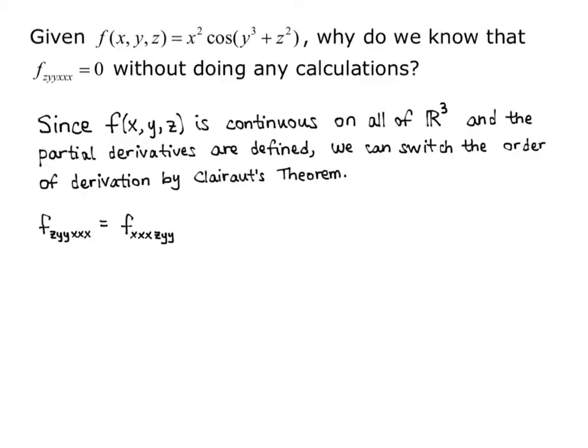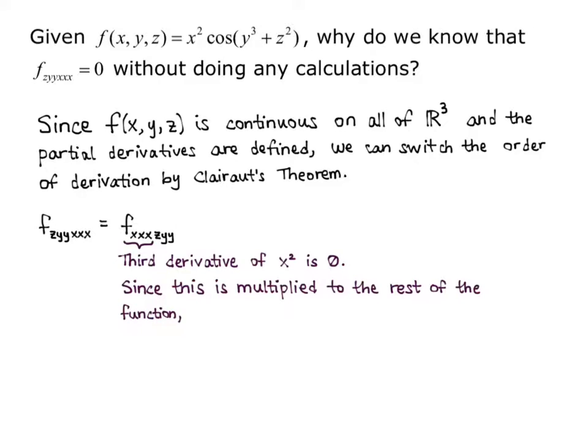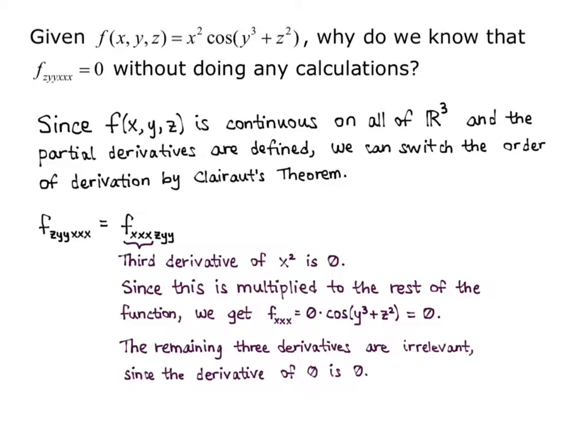And we know that the third derivative of x² is zero. Since this is multiplied to the rest of the function, we get f_xxx equals zero times cosine of y³ + z², which is just zero, and the remaining three derivatives are irrelevant, since the derivative of zero is zero.